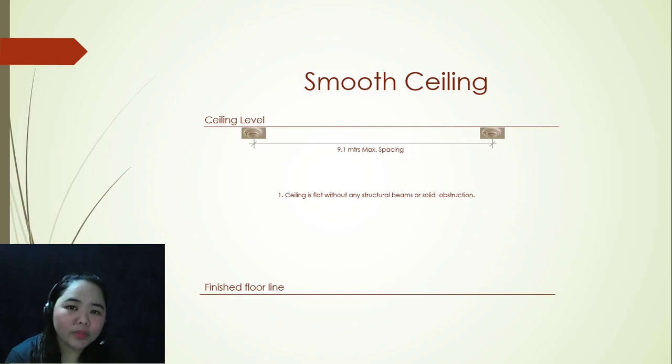Okay, so before we proceed to the main topic of this video, I am going to give you an overview of a smooth ceiling. When we say smooth ceiling, that's a ceiling which is flat without any structural beams or solid obstruction. And remember that the maximum distance should be 9.1 meters spacing.